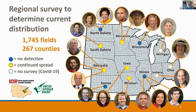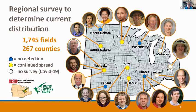Last year, 2021, we had over 1,700 commercial fields that we scouted in total, representing 267 counties in the North Central Region. The yellow dots show we have soybean gall midge in five states: Minnesota, South Dakota, Nebraska, Iowa, and Missouri. Since 2018 it represents a total of 140 counties. We had 26 new counties added to the map last year, shown in green. I think we're just getting really good at finding soybean gall midge — the map doesn't necessarily represent spread or movement, because we're finding them because we're looking.